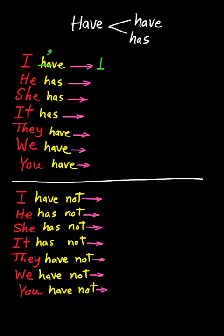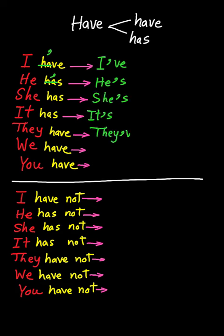It becomes 'I've'. And the same with 'has' — remove the 'h' and 'a' and put an apostrophe: he's, she's, it's, they've, we've, you've. For the negative form, we can merge 'have not' into one word.